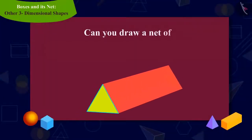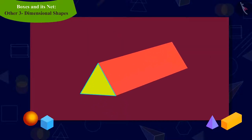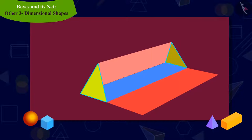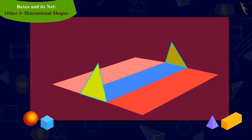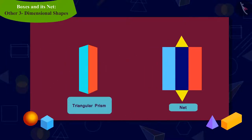Can you draw the shape of the net of this triangular prism? To do this, let us open the prism. By opening the right rectangular face, we can begin to draw the shape of a net. Then, at the end, we can open both the remaining triangular faces in such a way as to form the shape of the net of a triangular prism.